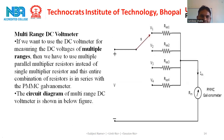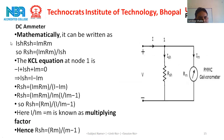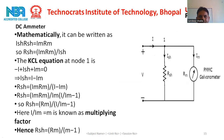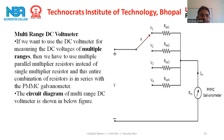In this slide, the multi-range DC voltmeter is discussed, which can measure multiple ranges of voltage. If we want to use the DC voltmeter for measuring DC voltage of multiple ranges, we have to use multiple series multiplier resistors instead of a single multiplier resistor. This entire combination of resistors in series with the PMMC voltmeter is known as the multi-range DC voltmeter. In the circuit diagram, the basic PMMC meter has these resistors connected in series, allowing measurement of multiple ranges of DC voltage.